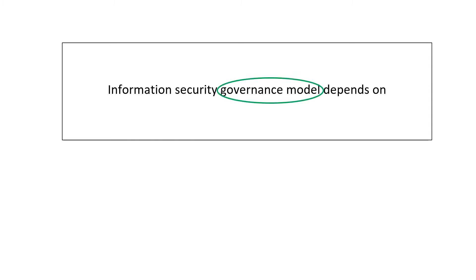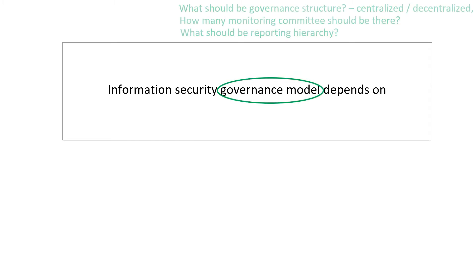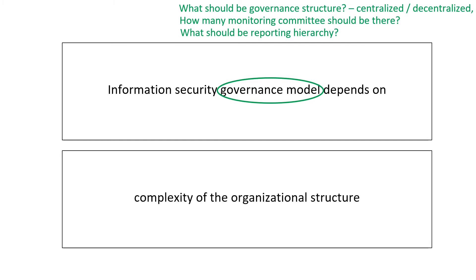Information security governance model depends on several factors. To determine the governance model, questions to be answered include: What should be the governance structure — centralized or decentralized? Who should be in the monitoring committee, and how many such committees should there be? What should be the reporting hierarchy? All these questions are answered on the basis of the complexity of the organizational structure. So, information security governance model basically depends on complexity of the organizational structure.